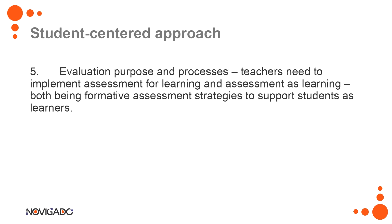Last but not least is the role of evaluation and the process we go through, which is very important. For active learning to be effective, the teacher needs to implement assessment for learning and assessment as learning — so not only grades measured by a number, but also effective formative assessment strategies to support students as learners. Without evaluation from the teacher, but also peer assessment or self-reflection, active learning would not be as effective as it could be.